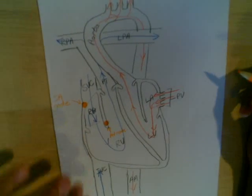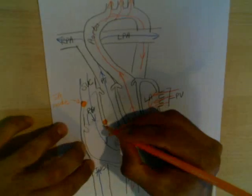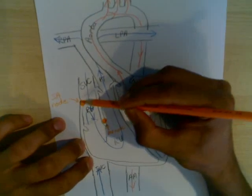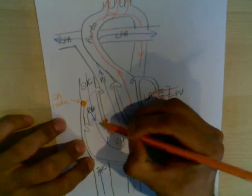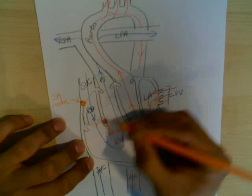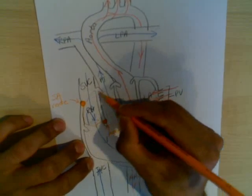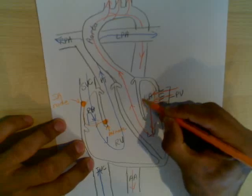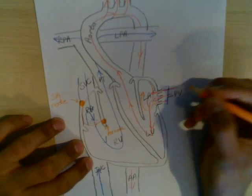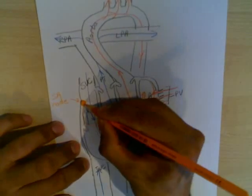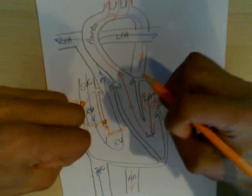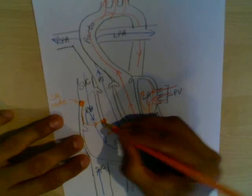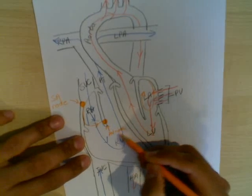So now I'm going to show you how the electrical impulse is conducted — the route it takes through the heart. The impulse starts at the SA node. It will travel round, depolarising the atria. There's a band of tissue that goes round the back of the heart, and it goes round the back and will depolarise the left atrium. When the atria depolarise, obviously the blood is forced out of the atria into the ventricles.